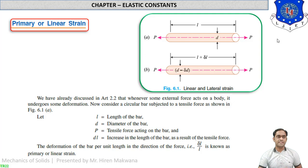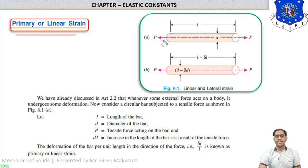In this chapter there are two strains: first is primary or linear strain, and second is secondary or lateral strain. For primary or linear strain, imagine a rod having diameter d and length l, subjected to tensile force P from both ends. Due to this tensile force, the length increases by delta-l, so the new length is l plus delta-l.